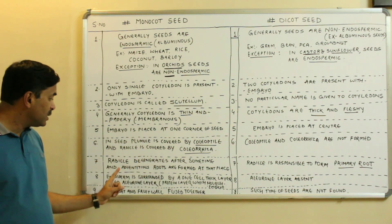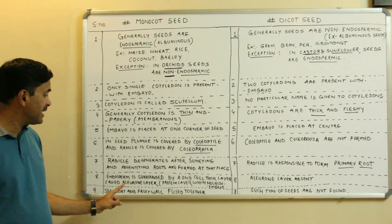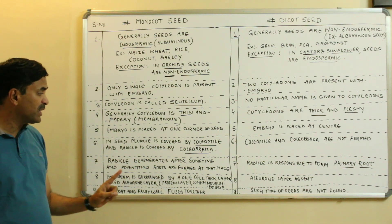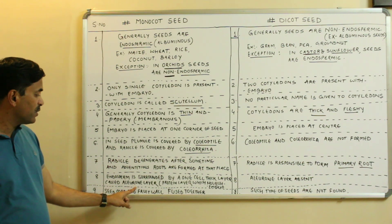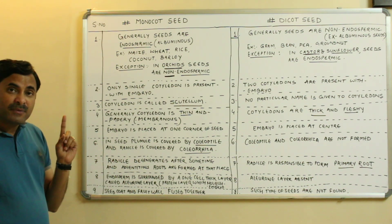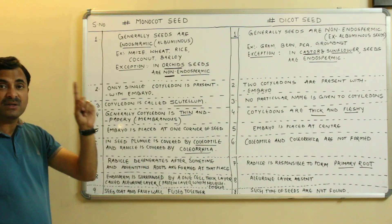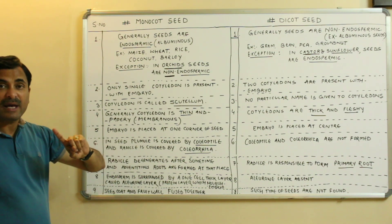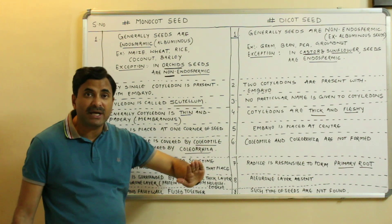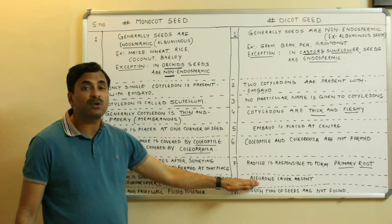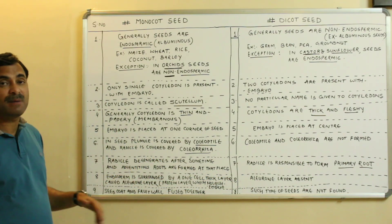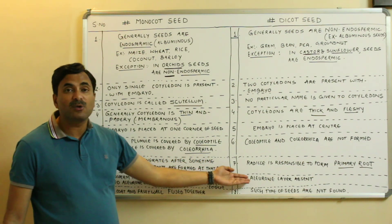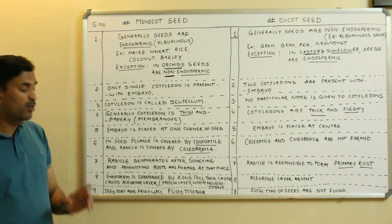Eighth point: in monocot seeds the endosperm is surrounded by a one-cell-thick layer called the aleurone layer. This is a protein layer that nourishes the embryo and is a characteristic feature of monocot seeds. Such an aleurone layer surrounding the endosperm is not found in dicot seeds — it is absent there.